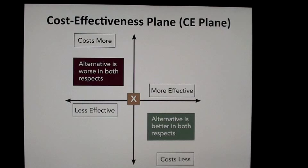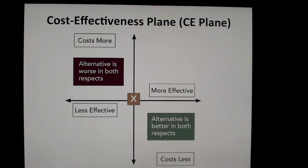However, the more common situation is the north-east quadrant or even the south-west quadrant. In the north-east quadrant, we have drugs, devices, procedures, or programs which are more effective but come at an incremental cost, and we have to decide whether or not that incremental cost is worth it. In the south-west quadrant, we might have something that is a little bit less effective but costs a lot less — and perhaps that's worth it too, since it releases resources back into the system that we may use for something even more cost-effective.